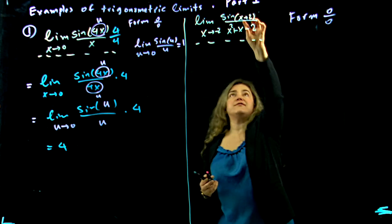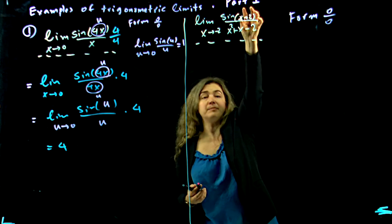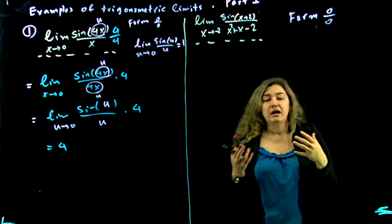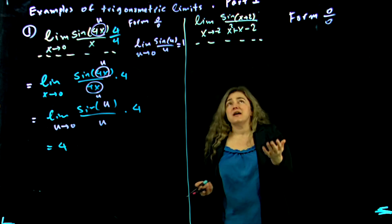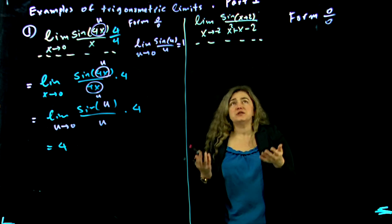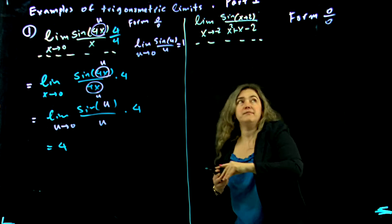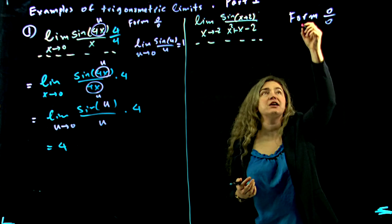Form 0 over 0. I have sine up there and I have a polynomial in the bottom. It seems like I should be able to do something with the same formula because it's in the same section that we're discussing.